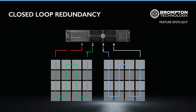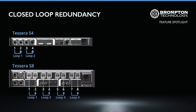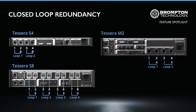The redundancy loops can only be created between adjacent ports on your processors. So for our Tessera S4, S8, and M2 processors, that is between ports 1 and 2, 3 and 4, and so on. As you can see, the Tessera S8, with its 8 ports, can run up to 4 closed redundancy loops.